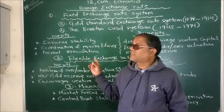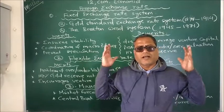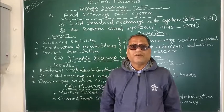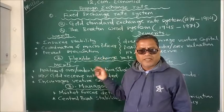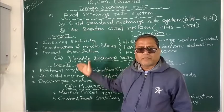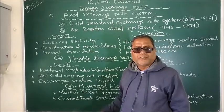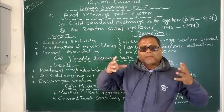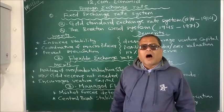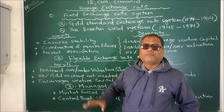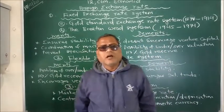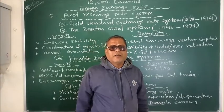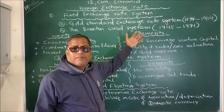Now it is time to discuss how exactly the foreign exchange rate is determined — what is the mechanism of determination of foreign exchange rate. As you can see on the blackboard, there are three different ways — with time, the system has evolved. In ancient times, meaning before one or two centuries, the exchange rate between different countries was determined differently, and how with the passage of time it evolved.